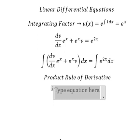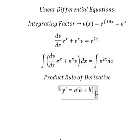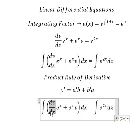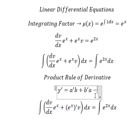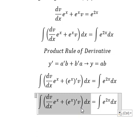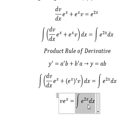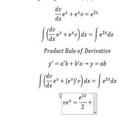We can apply the product rule of derivatives: the first derivative of y equals the first derivative of a multiplied by b, plus the first derivative of b multiplied by a. So the integration of this gives y equals a·b. The integration of that side is v·e to the power of s equals e to the power of 2s over 2, plus C.